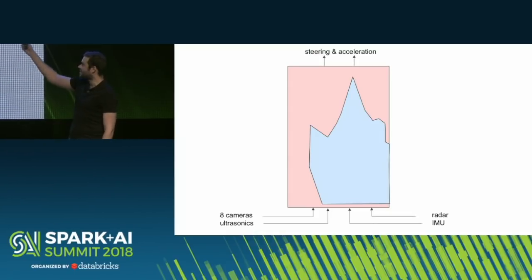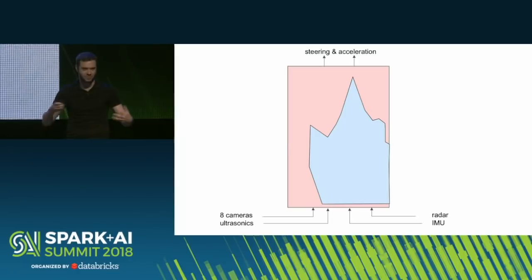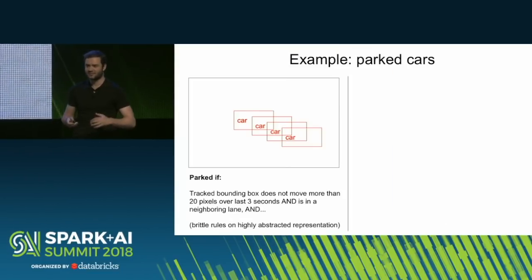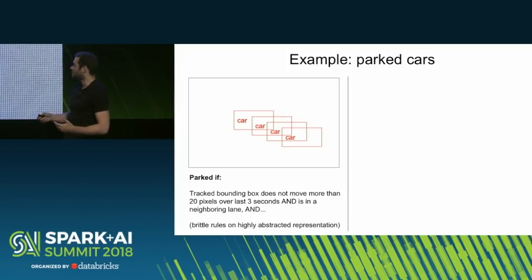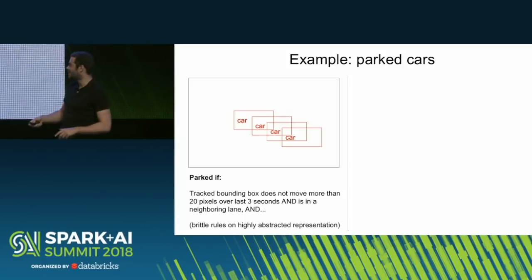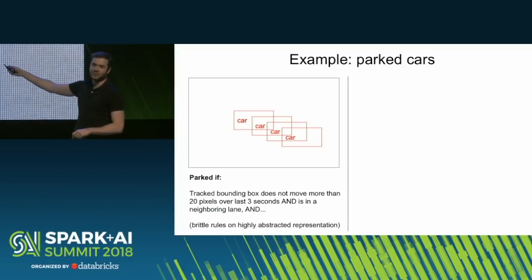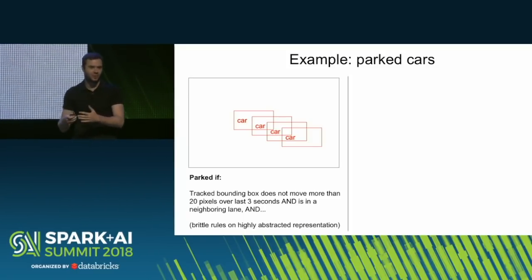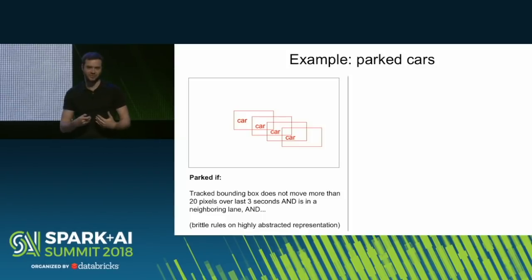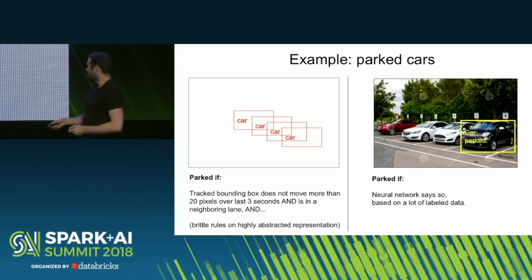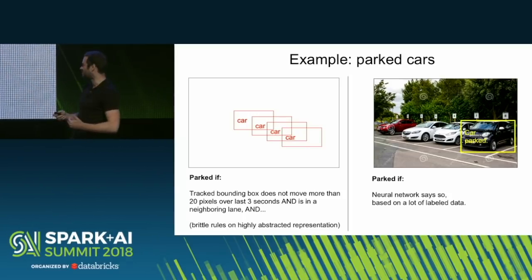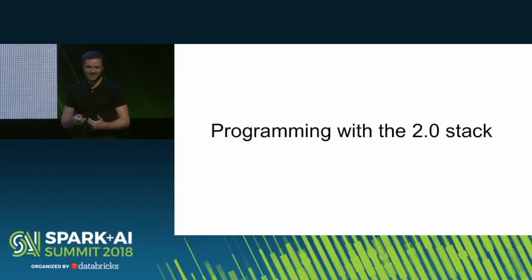The red is the code we've written; the blue is the code we've discovered through lots of compute. As a concrete example of this transition: suppose you want to detect if a vehicle is parked. One approach in the design mindset is to say the neural network gives you bounding boxes, and a car is parked if it's on the edge of the road, hasn't moved for a while, and there's a pattern to the cars. This is not the right approach — you're designing, and you shouldn't trust yourself to write that code. Instead, a car is parked if a neural network says so, based on a lot of labeled data. That's a much better approach, and we've tried pretty hard to confirm this.